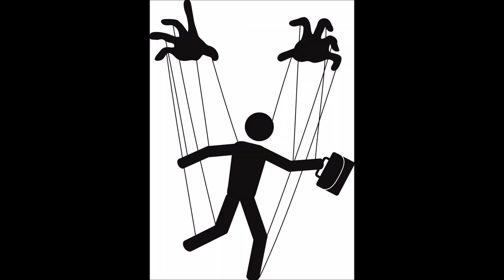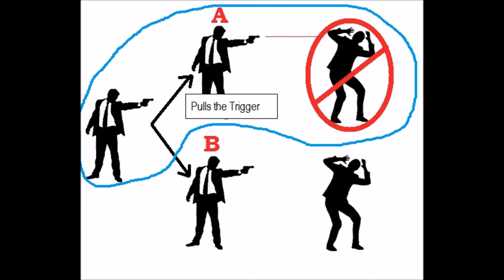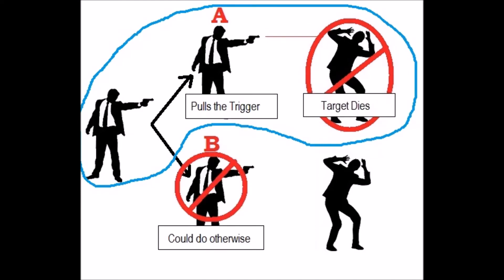Now, before getting too deep into the evil neuroscientist example, let's get clear on the normative model example. Here we have two possible worlds. In world A, the gunman pulls the trigger and the target dies. If the gunman could have done otherwise by refraining from pulling the trigger, then the gunman is responsible for pulling the trigger.